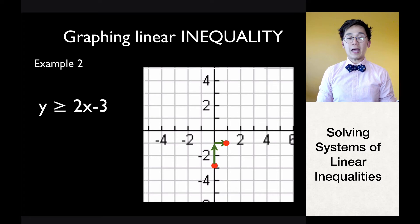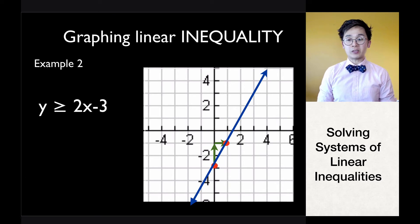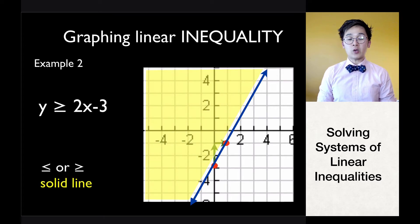In this case we have a solid line because the inequality uses a greater than or equal to symbol. Since it's greater than, we shade above the line. Remember: a solid line is used when your inequality symbol has an equal sign. This is how we graph the second example.